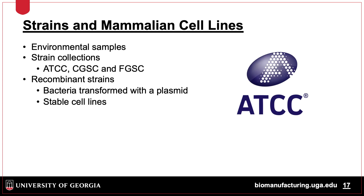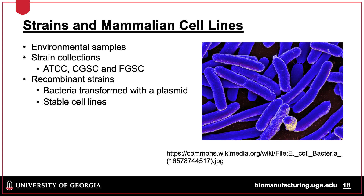A variety of microorganisms and mammalian cell lines are used for fermentation processes. Some strains are naturally occurring environmental isolates, and these, along with well-identified strains, are available as part of culture collections such as the American Type Culture Collection, or ATCC. Similarly, hundreds of strains of E. coli are available, some of which are in the Coli Genetic Stock Center, or CGSC.